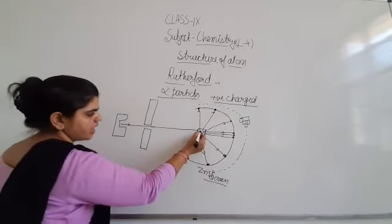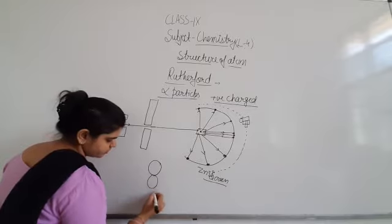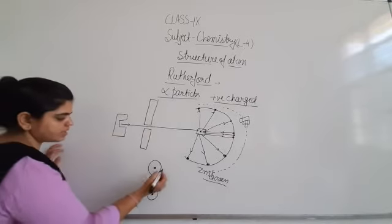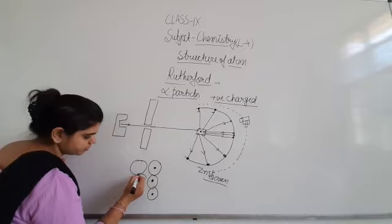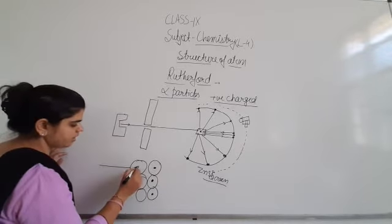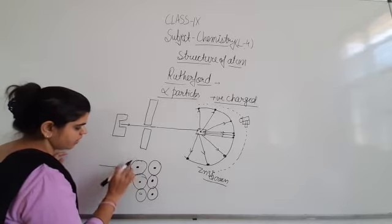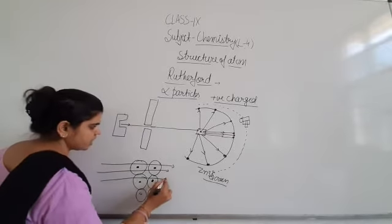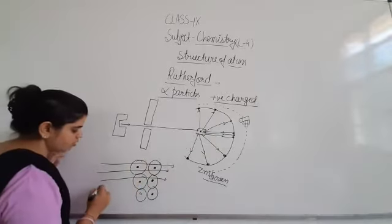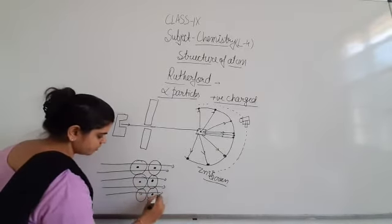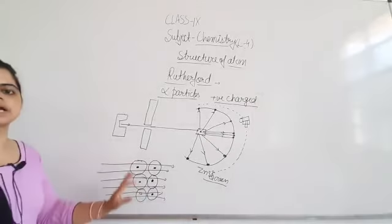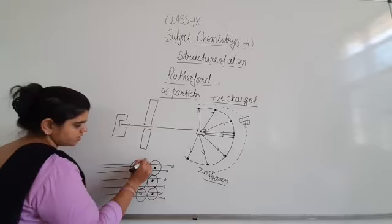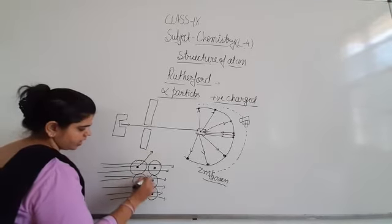What did we see? Particle atom structure. It has seen when alpha particles are, mostly alpha particles are, mostly alpha particles directly pass through. This is what? Mostly space in atom. Mostly space in atom.